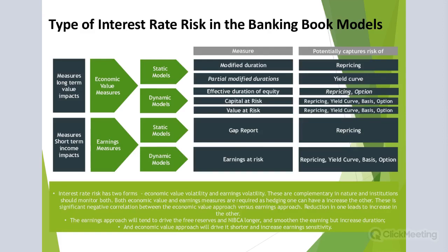The second category of models measures the short-term income impact — usually up to 12 months. These are known as earnings metrics or net interest income sensitivity, and they have the objective variable of impact on income — income volatility or margin volatility. These two groups divide into static and dynamic models.